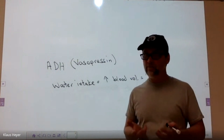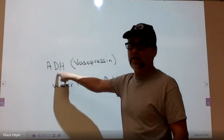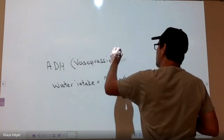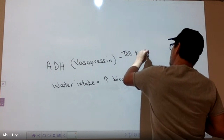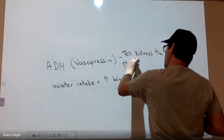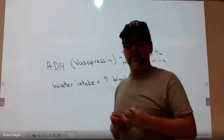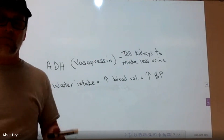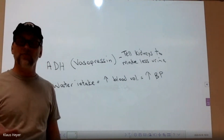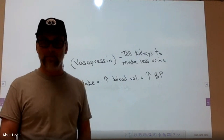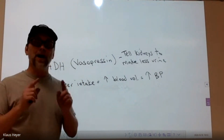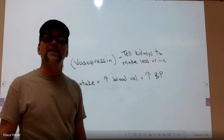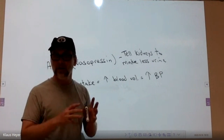By the time those people pass out, compensatory mechanisms have already failed them. One of those ways to compensate is anti-diuretic hormone. One thing ADH does is tell the kidneys to make less urine — to not put a lot of water in the urine. If you're dehydrated, you still have to make urine to clear waste, but you put the bare minimum amount of water in it. That's why it looks dark yellow.